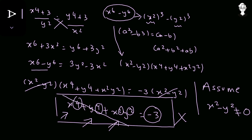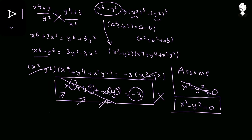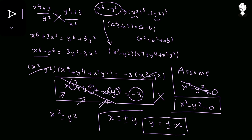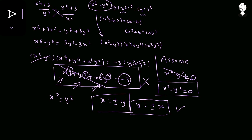Since that equation is impossible, our assumption was wrong. Therefore x² minus y² must equal zero. Adding y² to both sides gives x² equals y², and taking the square root of both sides gives x equals plus or minus y.